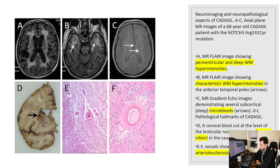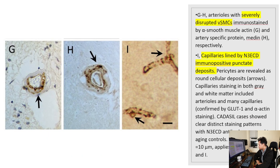Images E and F are histological slides showing deposits inside the blood vessel, as well as increased thickness and hyaluronic acid of the blood vessel wall itself. Images G and H show severely disrupted vascular smooth muscle cells.